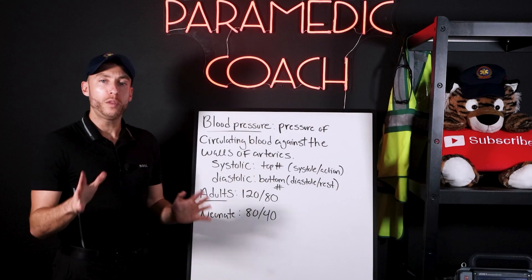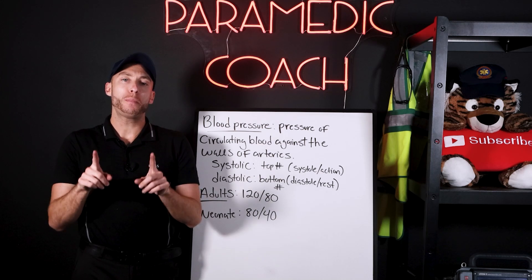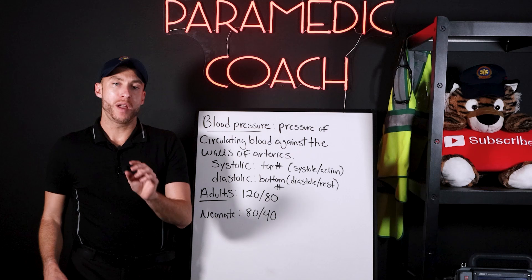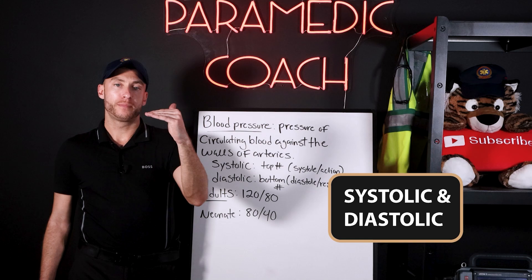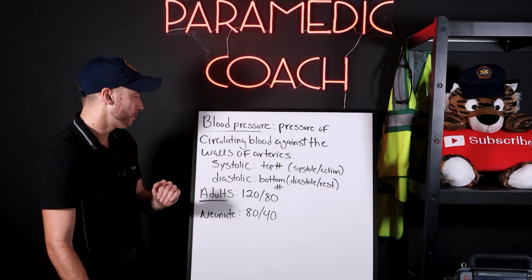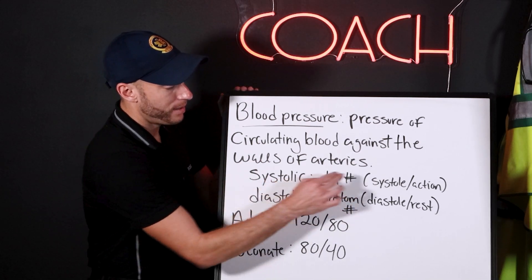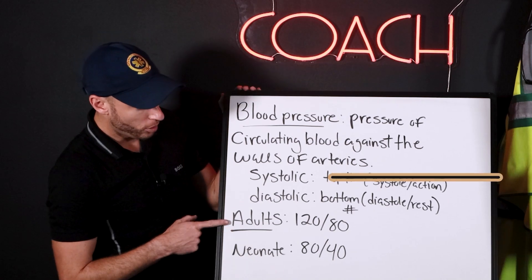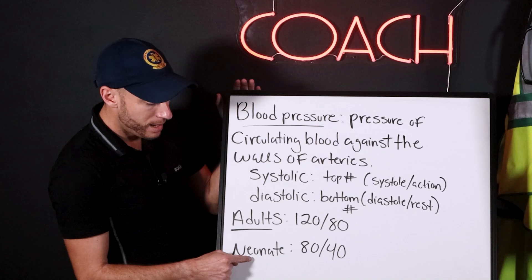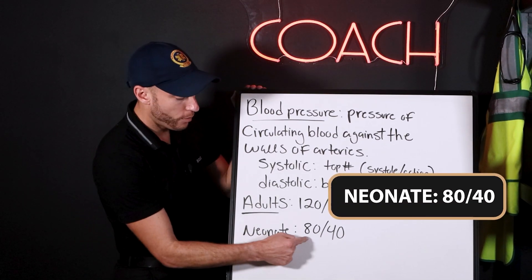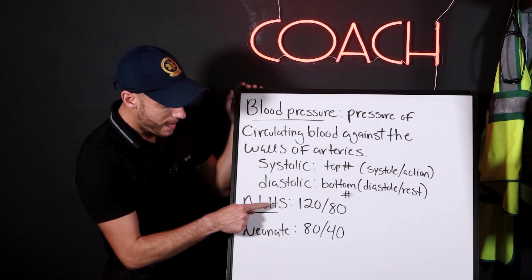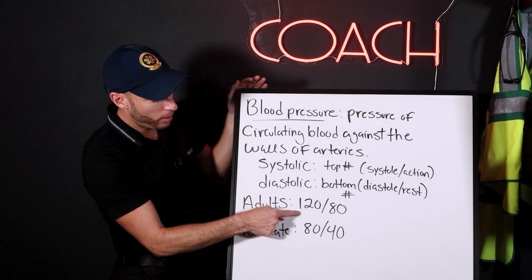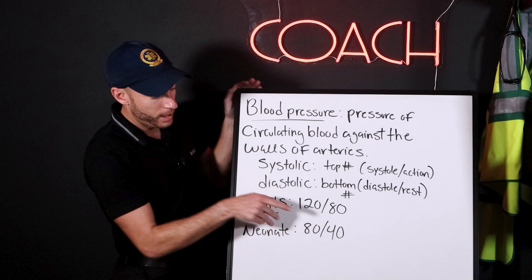Blood pressure gives us a number based on the pressure exerted on arterial walls. We have a systolic — the top number, the action phase — and a diastolic — the bottom number, the rest phase. For adults, 120/80 is normal. For a neonate, 80/40 is a fine blood pressure. As the patient's age increases toward adulthood, blood pressure ranges approach the adult normal.